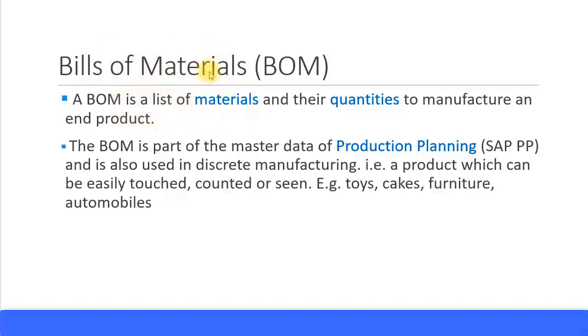The BOM is actually part of Production Planning, the SAP PP module, and is used in discrete manufacturing. Discrete manufacturing means a product which you can touch, see, or even count—for example, toys, cakes, furniture, automobiles, and so on. This type of product is called discrete manufacturing, and Bills of Materials is extensively used in Production Planning.